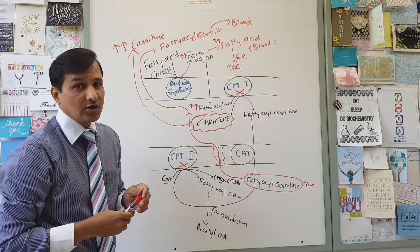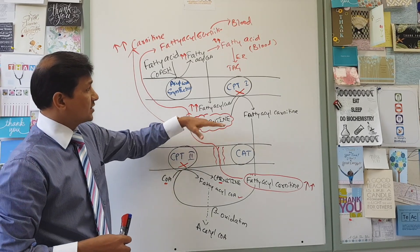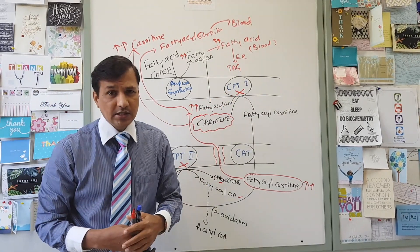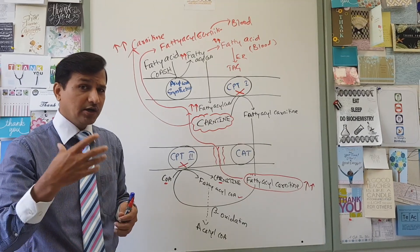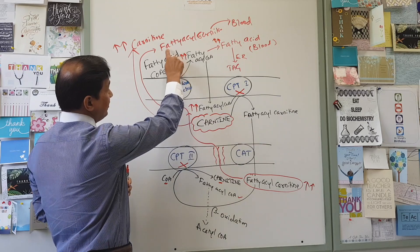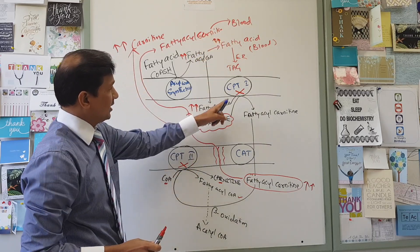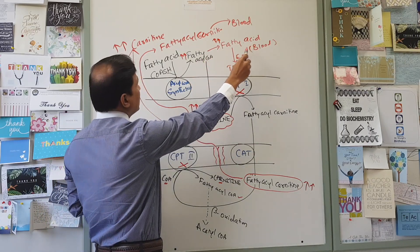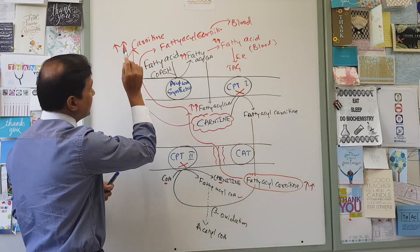So blood levels of long chain fatty acyl-carnitines will be increased in CPT2 deficiency. Some of the fatty acids can also go into omega-oxidation and become dicarboxylic acids. Dicarboxylic acids are seen in carnitine deficiency, CPT1 deficiency, and CPT2 deficiency, so they do not help differentiate between them. What differentiates is: in CPT2 deficiency, long chain fatty acyl-carnitines are elevated in the blood. In CPT1 deficiency, long chain fatty acids are elevated and carnitine is also increased. In carnitine deficiency, long chain fatty acids are elevated but carnitine is decreased.